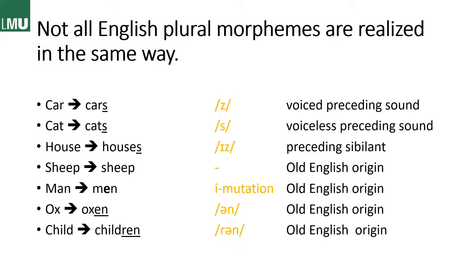And then we have 'house,' which ends in a so-called sibilant. Sibilants are the voiced and voiceless sounds for s, and the affricates in English. And then we have to add -iz, because we simply can't say 'houses' without that vowel — nobody would say that. So for reasons of economy of the language, we say 'houses.' And then we have the zero morphemes already mentioned: 'sheep' and 'sheep' — no plural marking at all, which has its origin in Old English.